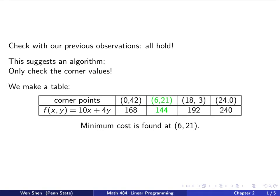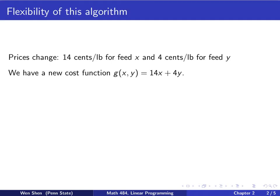And this algorithm actually gives you some flexibility. Using this algorithm, we can easily change the cost function without having to change much. Assume now there is a price change for the two feeds, that is, for feed x, the price is now 14, and for feed y, the price is now 4 cents per pound.